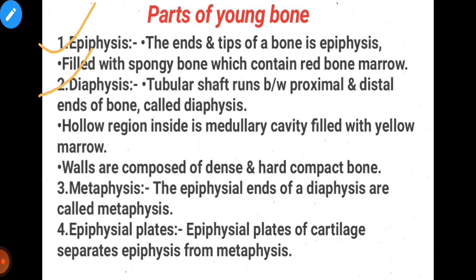Number two: diaphysis. The diaphysis is the tubular shaft that runs between the proximal and distal ends of the bone. In the middle of the diaphysis there is a hollow region called the medullary cavity or medullary canal. Inside, yellow marrow is present, which is made up of fat. The walls of the diaphysis are composed of dense and hard compact bone.